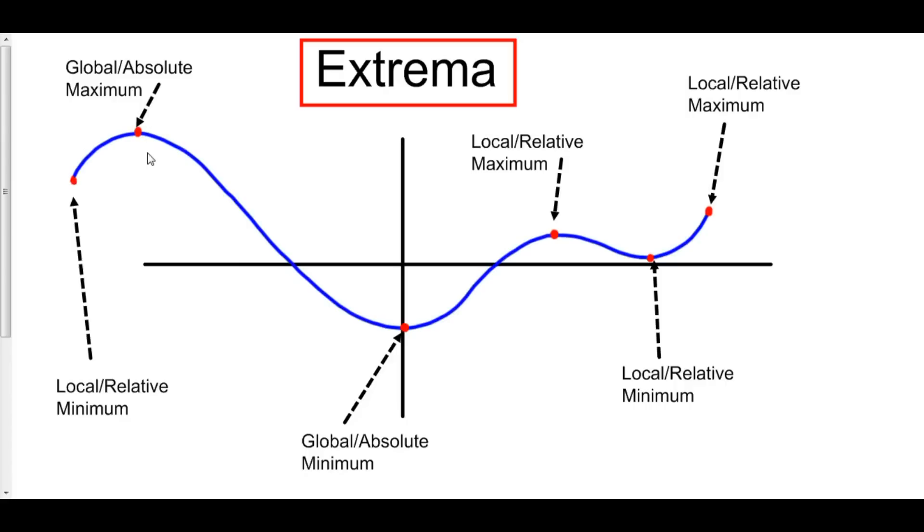Right here, we have what is called a global or an absolute max. It is the global max because it is the highest point on the entire function that we've created here from the left endpoint to the right endpoint. This is the highest point. Not only is that a global or an absolute max, but it's also a local max because it is the highest point in this particular neighborhood, in this area of points.